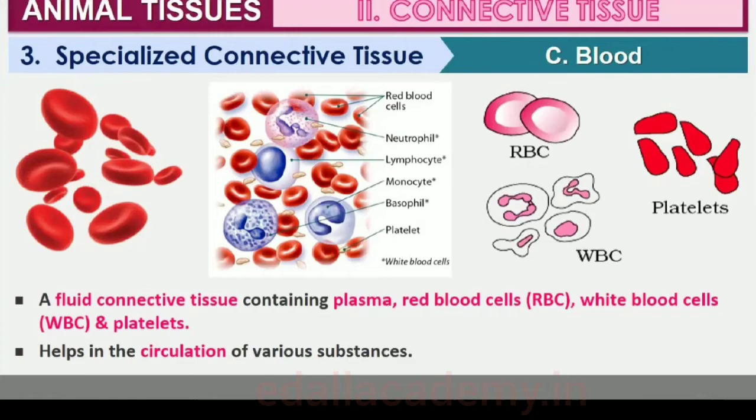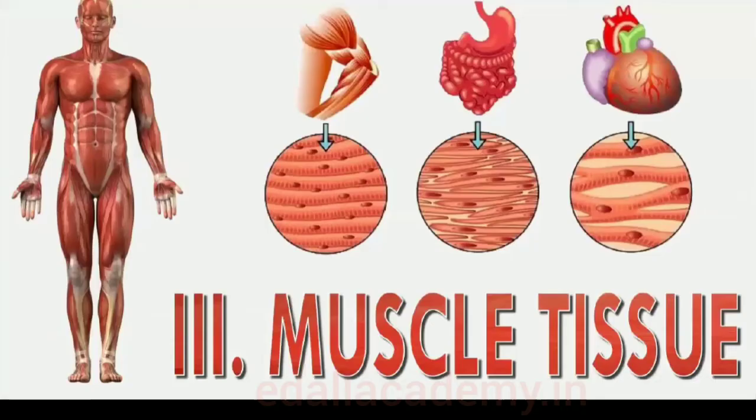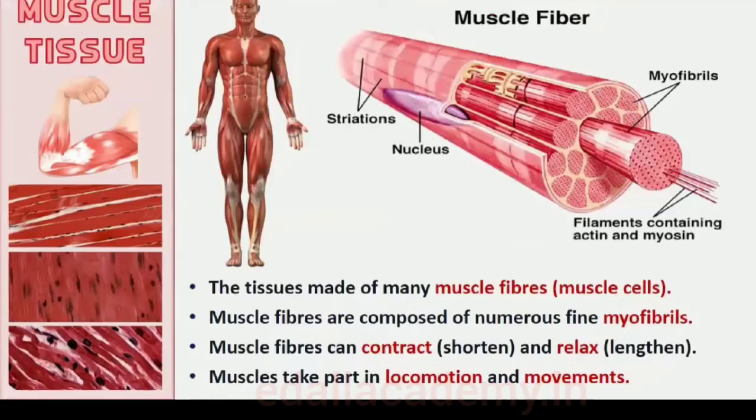7.1.3 Muscle Tissue. Each muscle is made of many long, cylindrical fibers arranged in parallel arrays. These fibers are composed of numerous fine fibrils called myofibrils. Muscle fibers contract and shorten in response to stimulation, then relax and lengthen, and return to their uncontracted state in a coordinated fashion. Their action moves the body to adjust to the changes in the environment and to maintain the positions of the various parts of the body. In general, muscles play an active role in all the movements of the body.